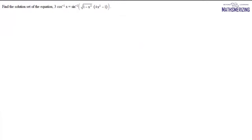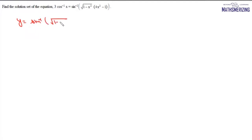Let us take another question: find the solution set of the equation 3·cos⁻¹(x) = sin⁻¹(√((1 - x²)(4x² - 1))).